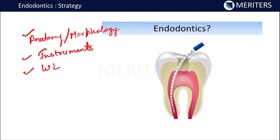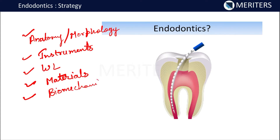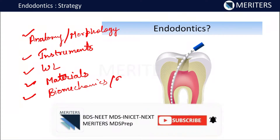After that, you should know about working length, and then the different materials used while doing RCT — that includes your irrigants, intracanal medicaments, and obturating materials. Then, when starting, you should know the cleaning and shaping procedure, or what we call biomechanics — what type of motions are required, which files are required, how to use irrigants, what timing is needed, which irrigant to use, and which two irrigants cannot be used simultaneously. This is all covered under the heading of cleaning and shaping.